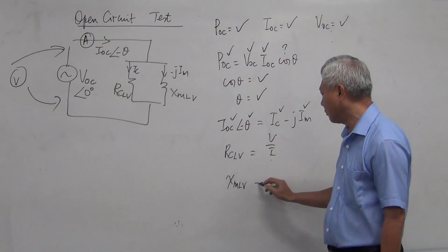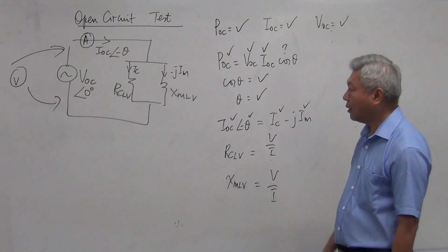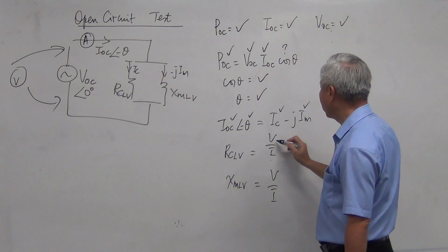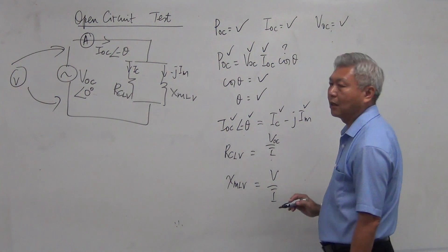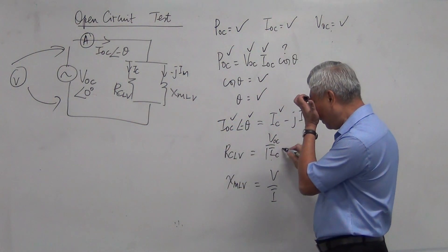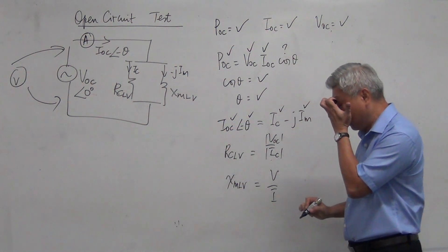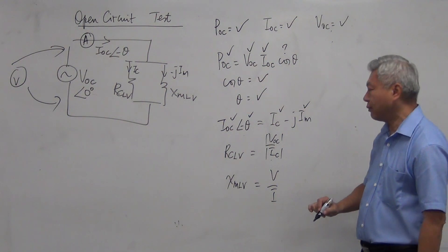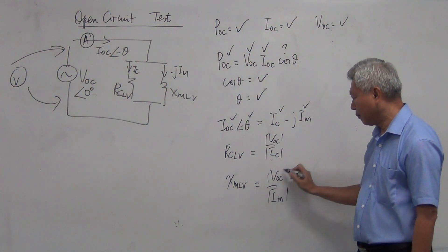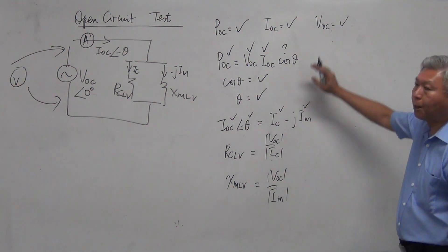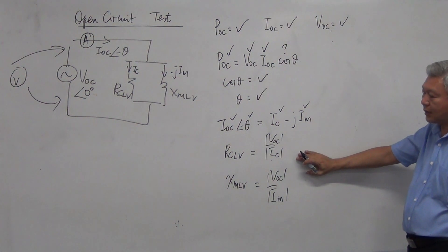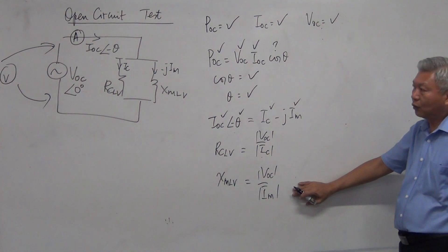Then, using Ohm's law to find RC and XM: since this is a parallel circuit with voltage VOC across both branches, RC equals VOC divided by IC, and XM equals VOC divided by IM. We only talk about the magnitude. That is the open circuit test — the method to derive the core loss resistance and magnetizing reactance at the low voltage side.